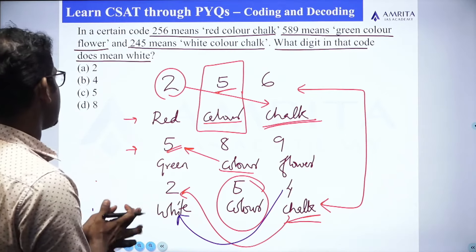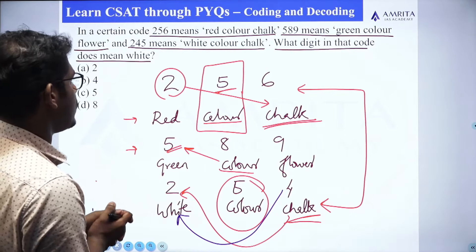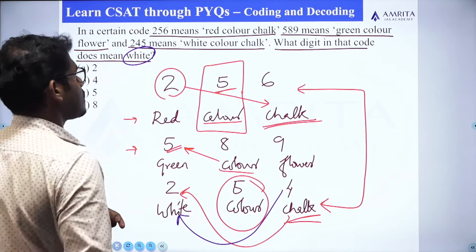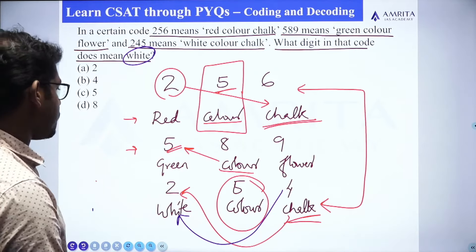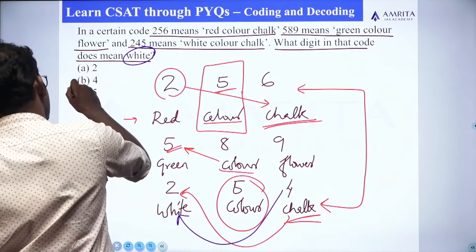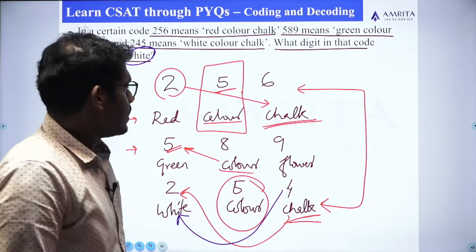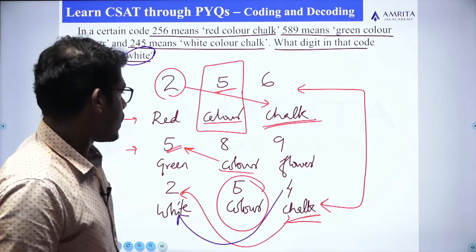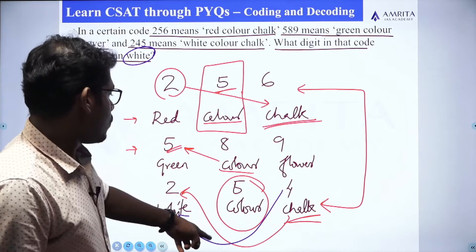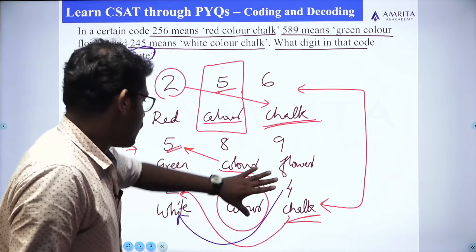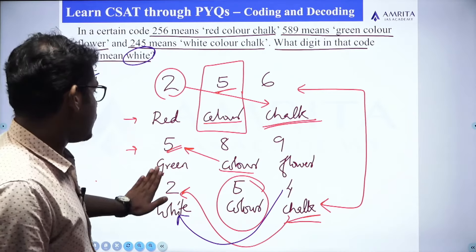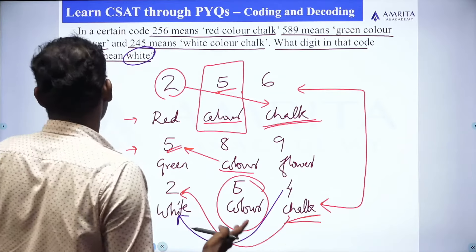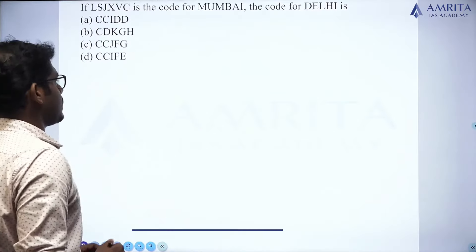What digit in that code does mean white? Yes, it is 4. The answer for this question is option B, 4. First we found the code of color, then the code of chalk, and from there we found the code for white — which is 4. Simple question.